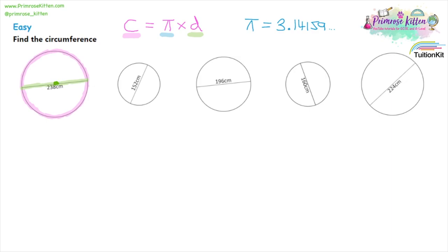To calculate question one: the circumference is pi times the diameter. One tip is to always write out the formula every single time — it helps you remember it. Circumference is pi D, pi times the diameter. You don't need to write the multiply sign in algebra; if you've got two symbols next to each other, you assume it's multiplication. Then substitute in the values: the circumference equals pi multiplied by the diameter, which is 238.